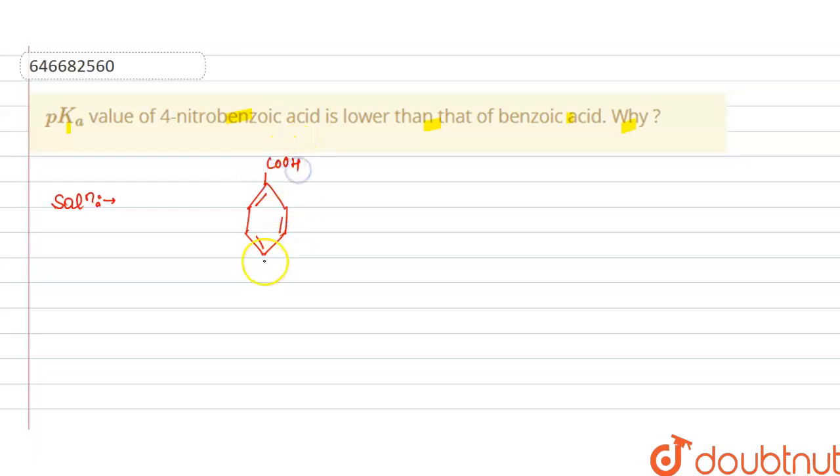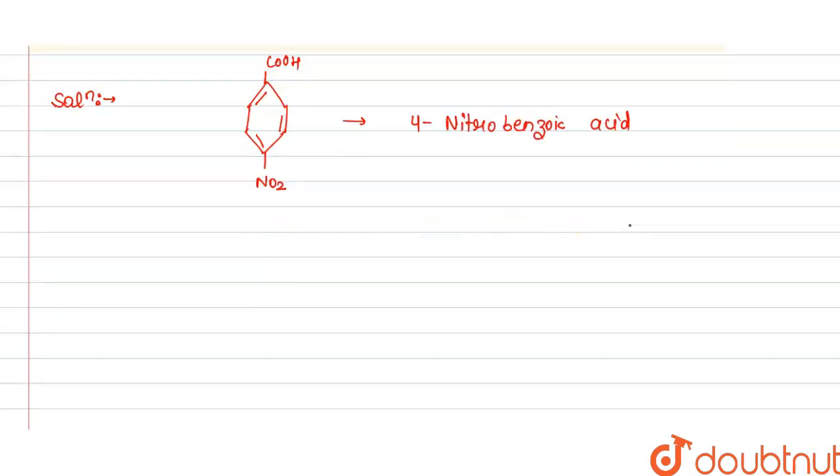Here COOH group and here we have NO2. So this is 4-nitrobenzoic acid, and benzoic acid is...